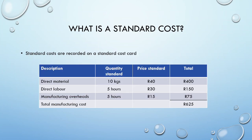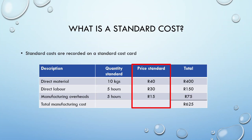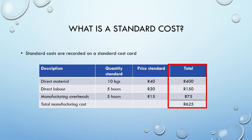A standard cost is typically recorded on a standard cost card. It includes a quantity standard for each type of material, labour, and manufacturing overhead used, detailing how much of a resource a unit of production requires. We also have a price standard for each unit of resource: 40 Rand per kilogram of direct materials, 30 Rand per labour hour, and 15 Rand per hour for manufacturing overheads. Multiplying the quantity and price standards gives the total per-unit cost for each component, which are then summed to give the total manufacturing cost per unit.